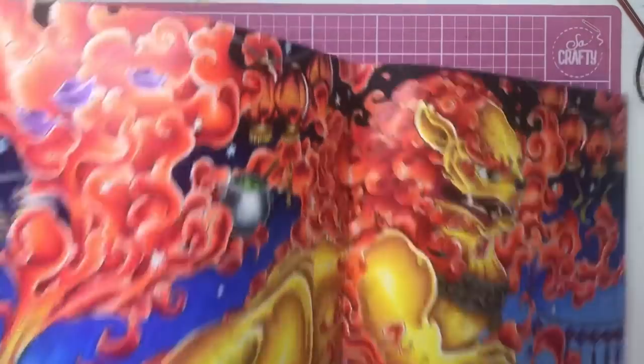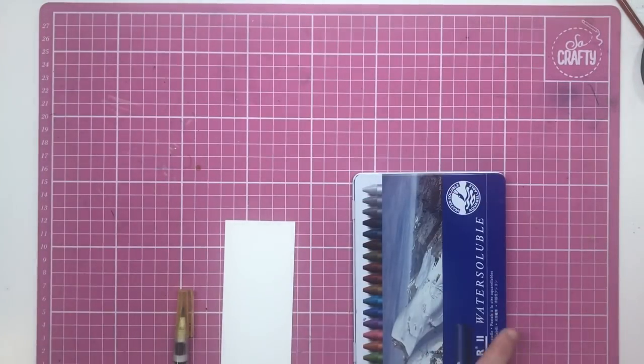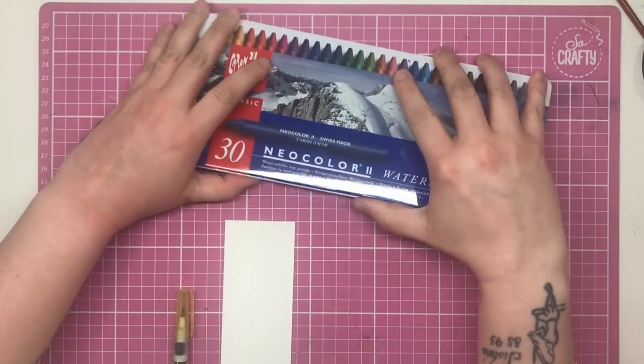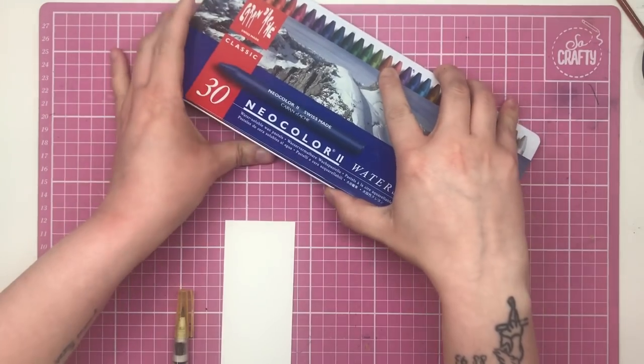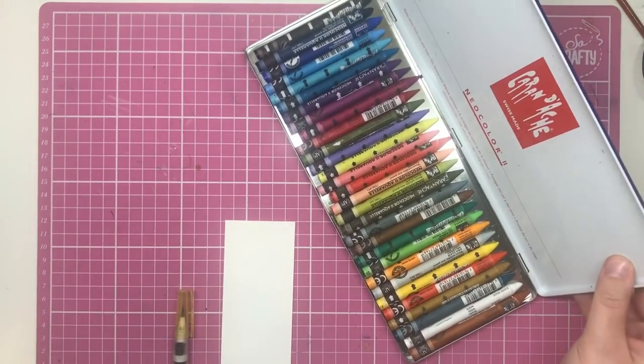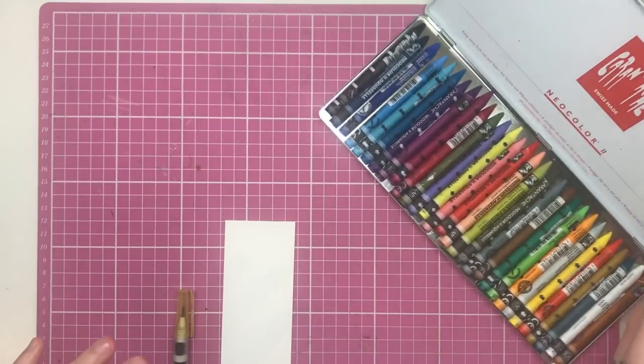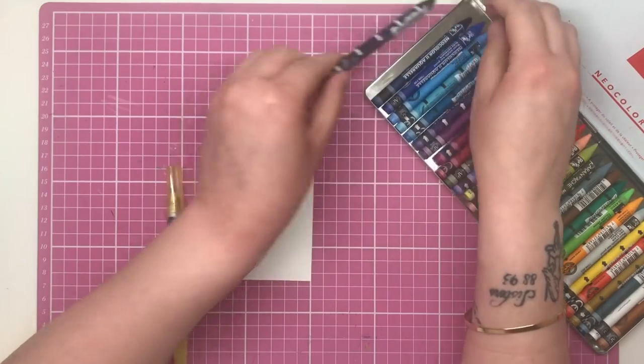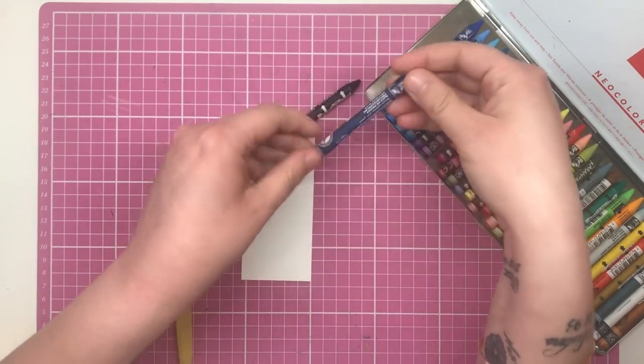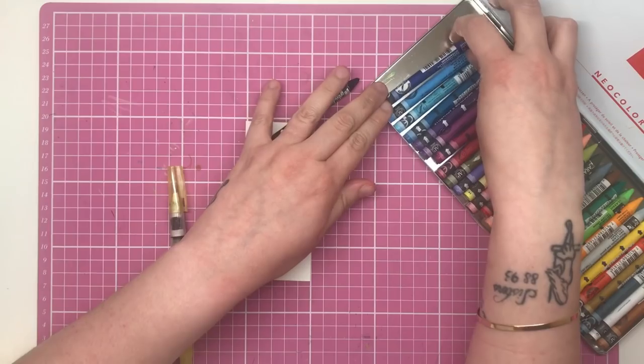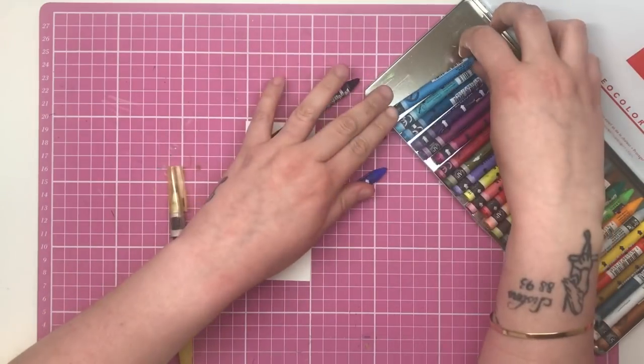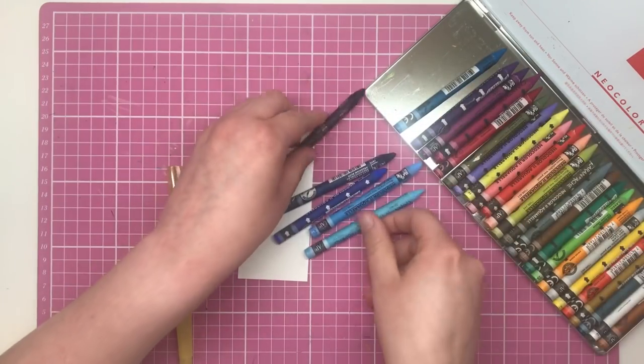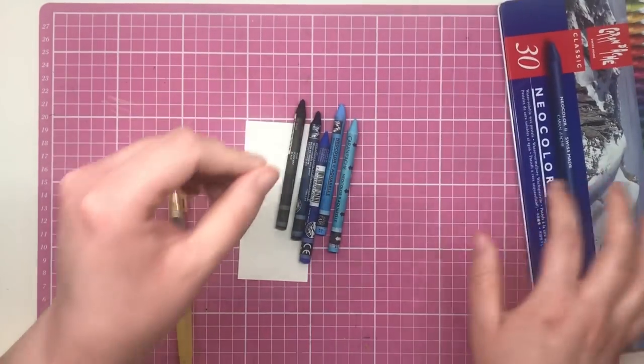I've got my Neo colours here, I've only got the 30 set. I would absolutely love to have the full set because they're an amazing supply, but you can do a lot with this 30 set. The colors you'll need for that exact sky are black, Prussian blue, ultramarine, light blue, and finally turquoise blue. Those are the five colors you will need for that particular one.